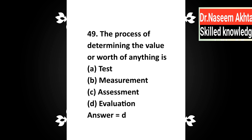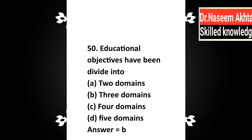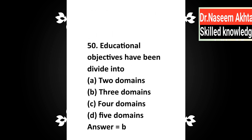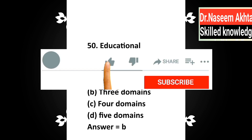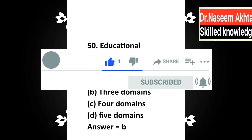Question 47: The process of determining the value or worth of anything is — a) test, b) measurement, c) assessment, d) evaluation. Correct answer is D: evaluation. Question 50: Educational objectives have been divided into — a) 2 domains, b) 3 domains, c) 4 domains, d) 5 domains. Correct answer is B: 3 domains. Educational objectives have been divided into 3 domains. These are the most important MCQs.